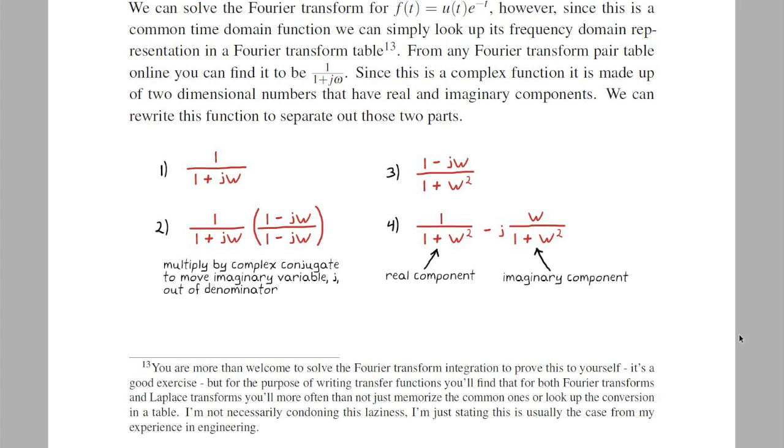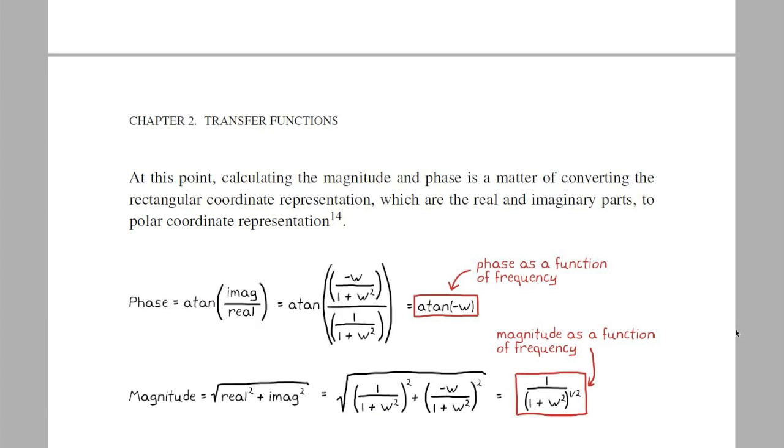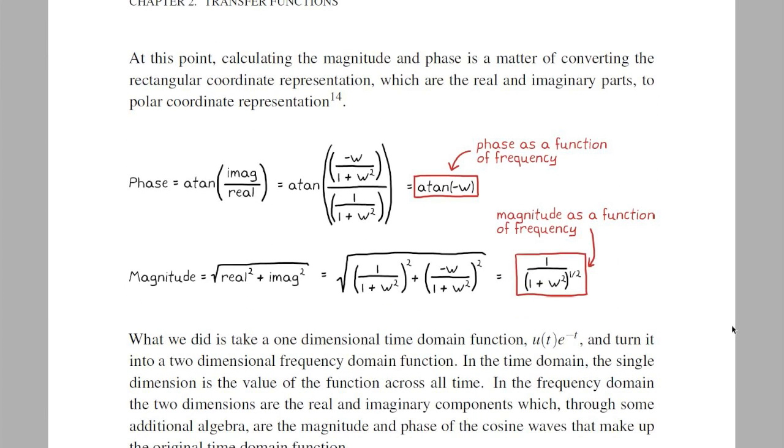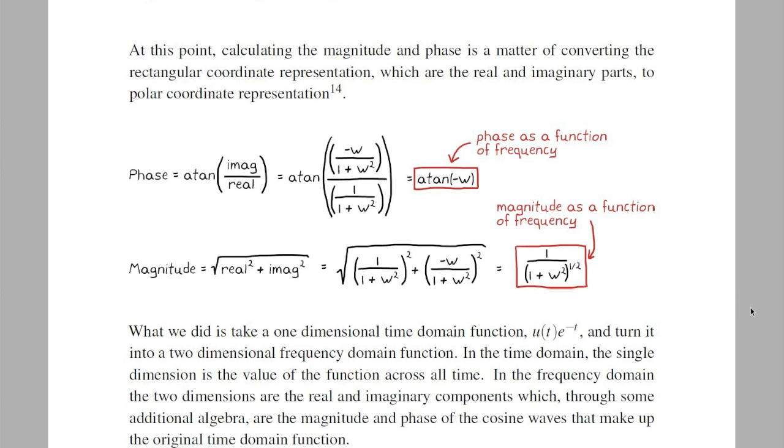Now if you were to plot this function across all frequencies, omega, then you'd get a real plot and an imaginary plot separately, or you could just plot them together on a 2-axis plane. And describing the result as real and imaginary is called the rectangular coordinate representation, but to turn it into magnitude and phase we need to convert it into the polar coordinate representation, which is done here.